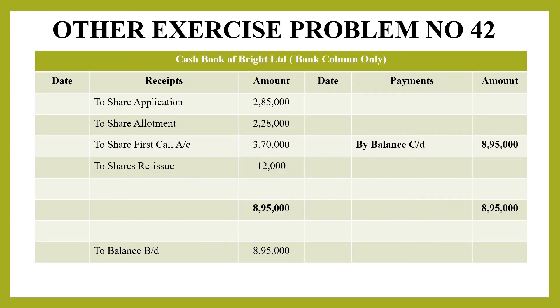Next is the cash book. Amounts received: share application — 2,85,000 rupees; share allotment — 2,28,000 rupees; share first call — 3,70,000 rupees; reissue — 12,000 rupees. Total receipts: 8,95,000 rupees. This is balanced by balance carried down of 8,95,000, and brought down for the next year as 8,95,000 rupees. Cash book is complete.